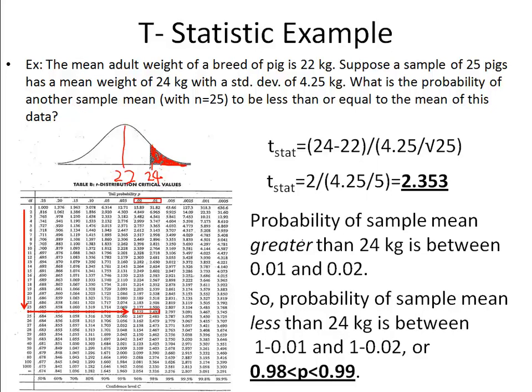So the probability of a sample mean less than 24 kilograms is between 98 and 99 percent, so just 1 minus those numbers.